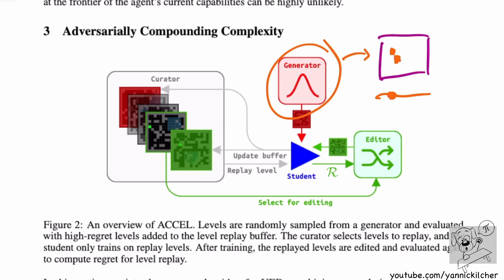Once we have the generator, we could already build some sort of curriculum algorithm — just sample different levels and train the agent on all of them. However, that wouldn't amount to much of a curriculum, as it would probably generate easy and hard levels mixed together. The agent might solve easy levels a bit, and maybe a bit of the harder ones. But if you don't sequence this correctly, there's a big chance of failure, mostly because as the level design space grows, most levels fall into 'too easy' or 'way too hard', with very few in the zone of proximal development.